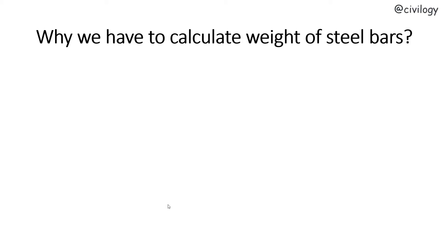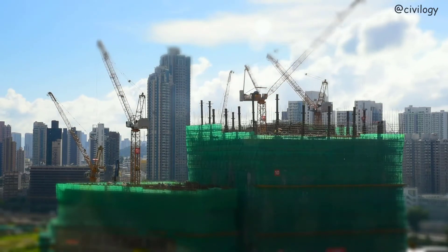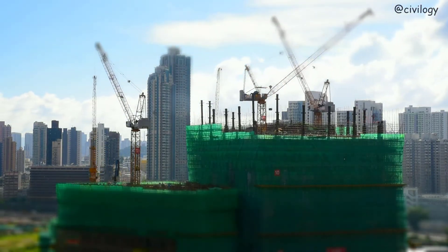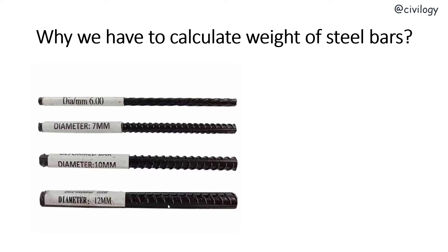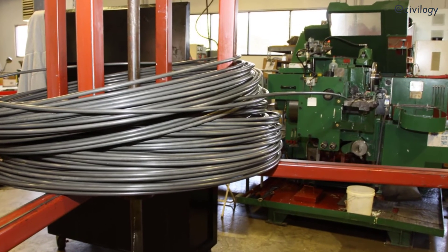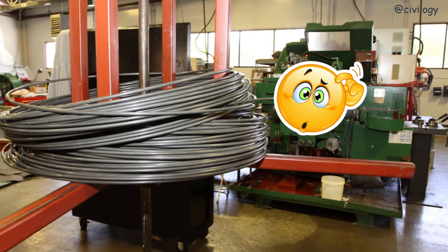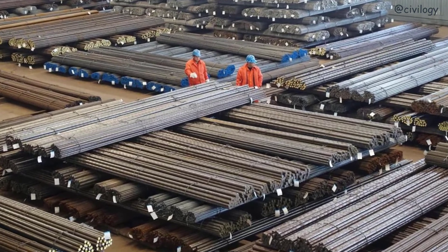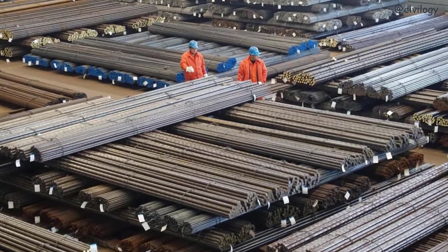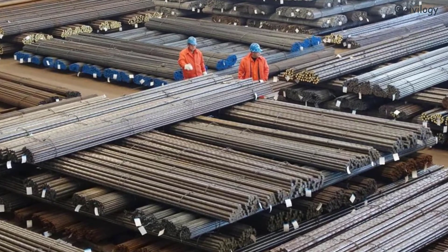So why do we have to calculate the weight of steel bars? For this you need to understand how estimation works. For every project, steel is represented in length — as meters, feet, etc. — and diameter of bar in mm. For example, we estimate as '10 meter, 8 mm diameter bar.' But here comes the big problem: manufacturers and suppliers measure steel in kg, quintal, or tons.